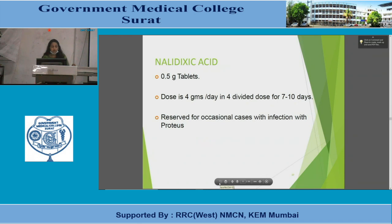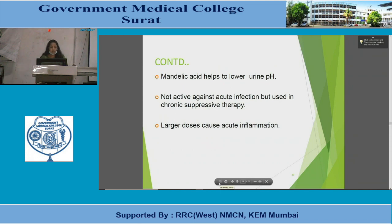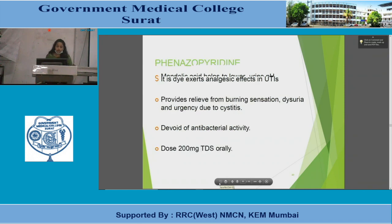Nalidixic acid is available as 500 mg tablets; the dose is 4 grams per day in four divided doses for 7–10 days, reserved for occasional cases with Proteus infection. Methenamine mandelate is a salt of mandelic acid; it is rapidly absorbed from the GIT and excreted in urine. At acidic pH less than 5.5, methenamine liberates formaldehyde, making urine more acidic. The recommended dose is 500 mg four times a day; mandelic acid helps lower urinary pH. Not active against acute infection but used in chronic suppressive therapy; larger doses cause acute inflammation.